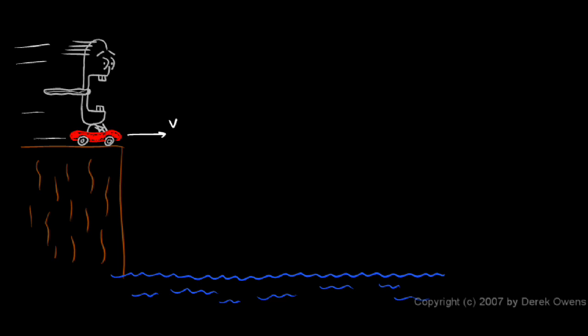In this case he leaves with an initial velocity, v0, equal to 25 meters per second. We're also told that the cliff is 80 meters high. And just for fun, let's put some jagged rocks here that extend out 100 meters from the edge of the cliff.